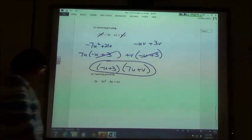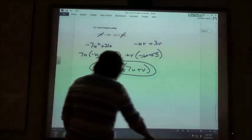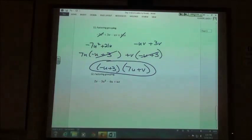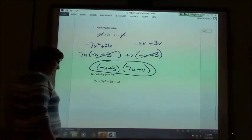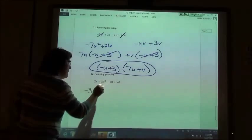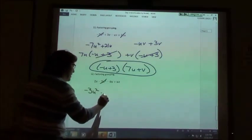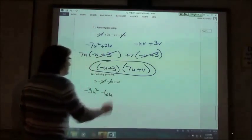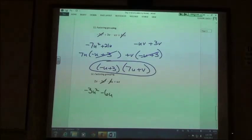So my common factor is the negative u plus 3. My other factor would be 7u plus v. Number 12, still factoring by grouping. Which two should I group together to start with?